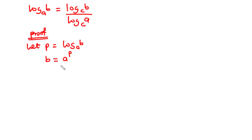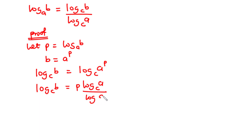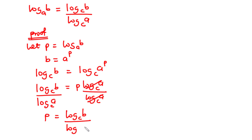In the next step, we are going to take log of both sides. This becomes log B base C equals log A exponent P base C. According to the power rule, we can transfer P, which is the exponent of A, in front of the logarithm. So we have log B base C is equal to P times log A base C. Since we are interested in finding the value of P, we divide through by log A base C, giving P equals log B base C over log A base C.